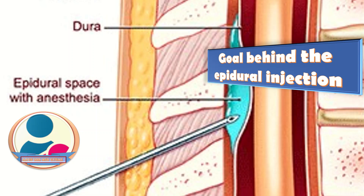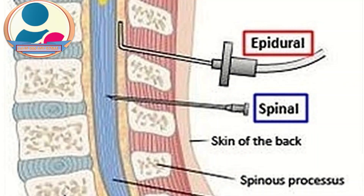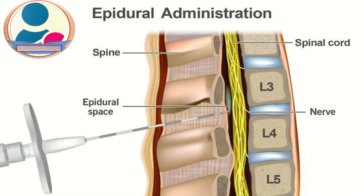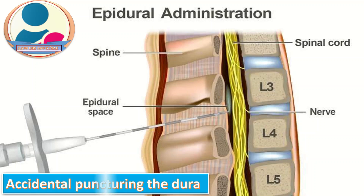The goal of an epidural injection is to access the spinal space without puncturing the dura or subarachnoid space. However, coming into contact with the dura can lead to leakage of cerebrospinal fluid. So an epidural headache is caused by a healthcare professional accidentally puncturing the dura, causing leakage of CSF.